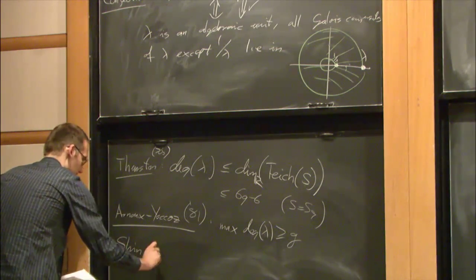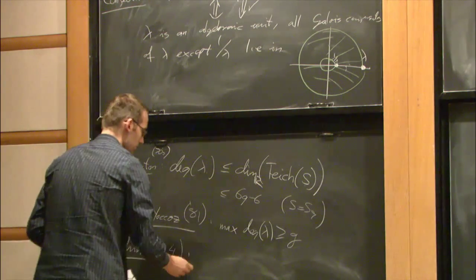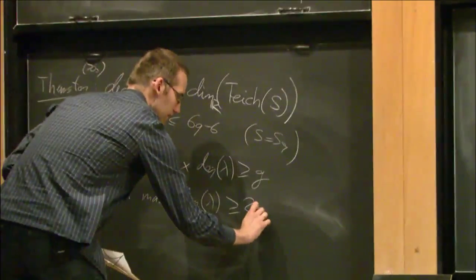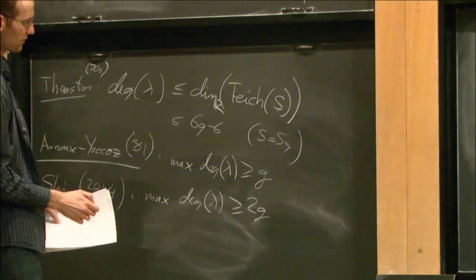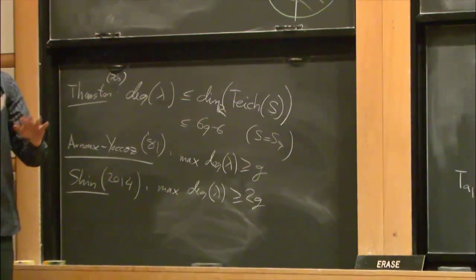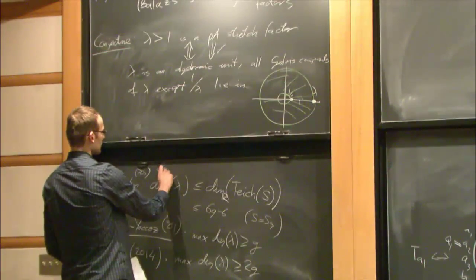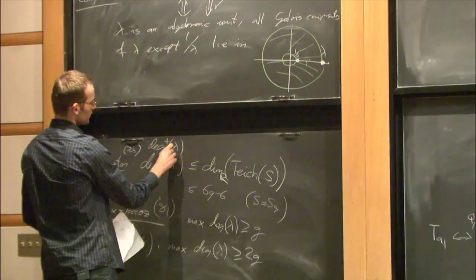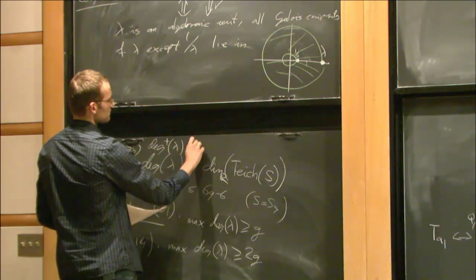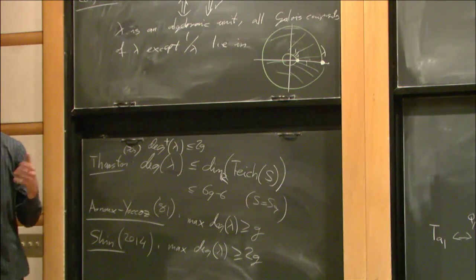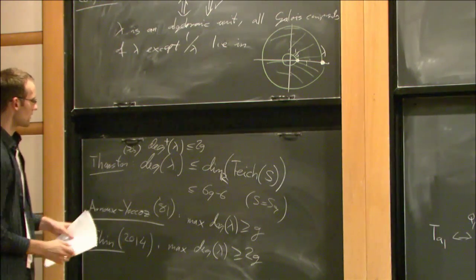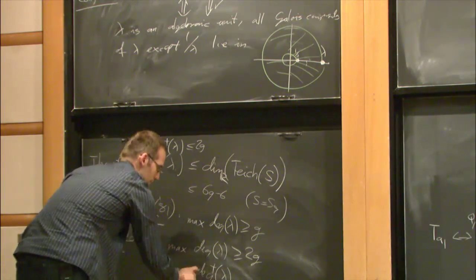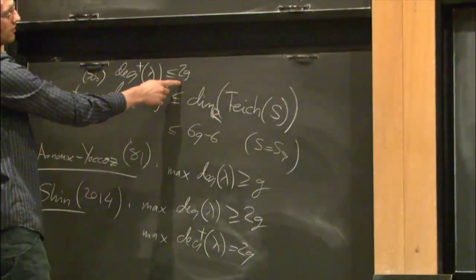Very recently, Shin showed that the maximum degree is at least 2g. One can also consider pseudo-Anosovs with orientable stable and unstable foliations — let's denote that with a plus. If lambda is a stretch factor of such an orientable pseudo-Anosov map, there is a smaller bound of 2g, because then the stretch factor is the eigenvalue of the action on homology, which is 2g-dimensional. What Shin actually proved is that in the orientable case, this theoretical maximum of 2g is actually realized.